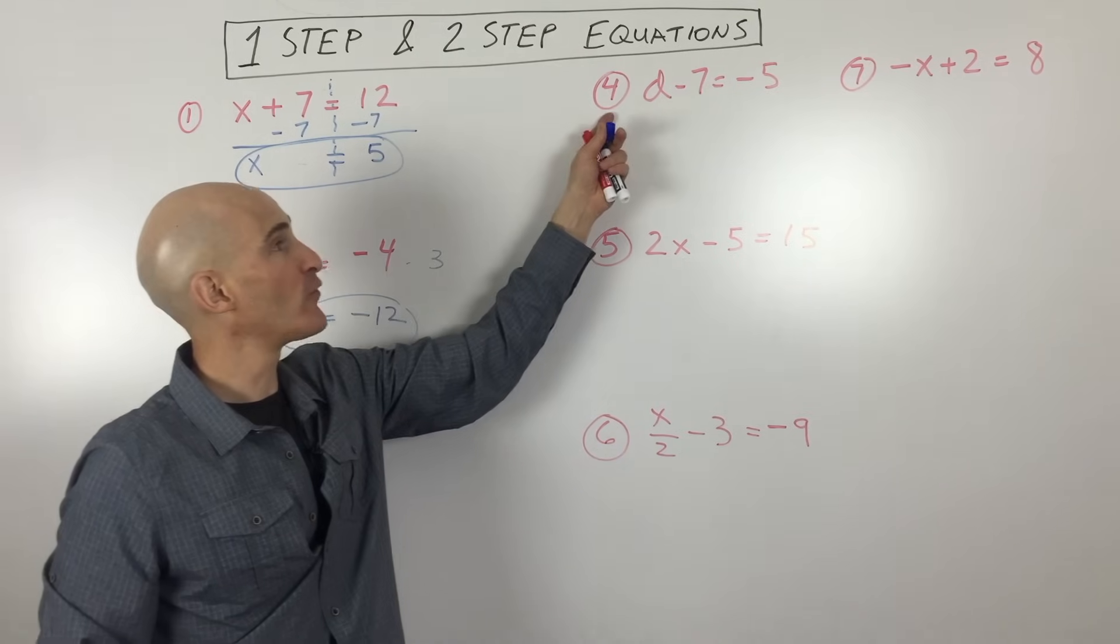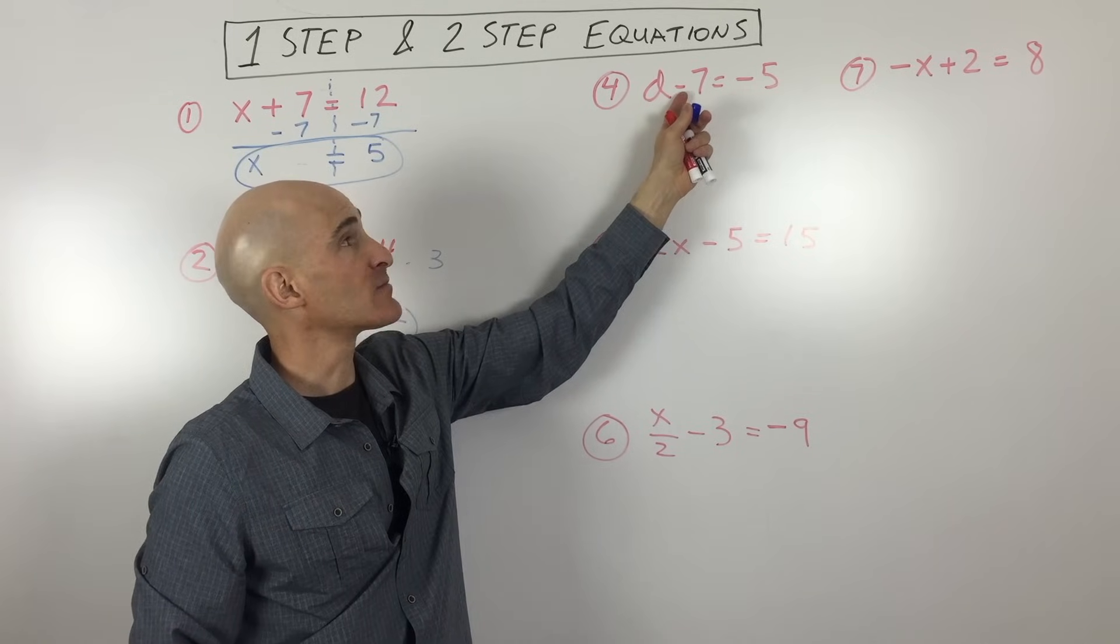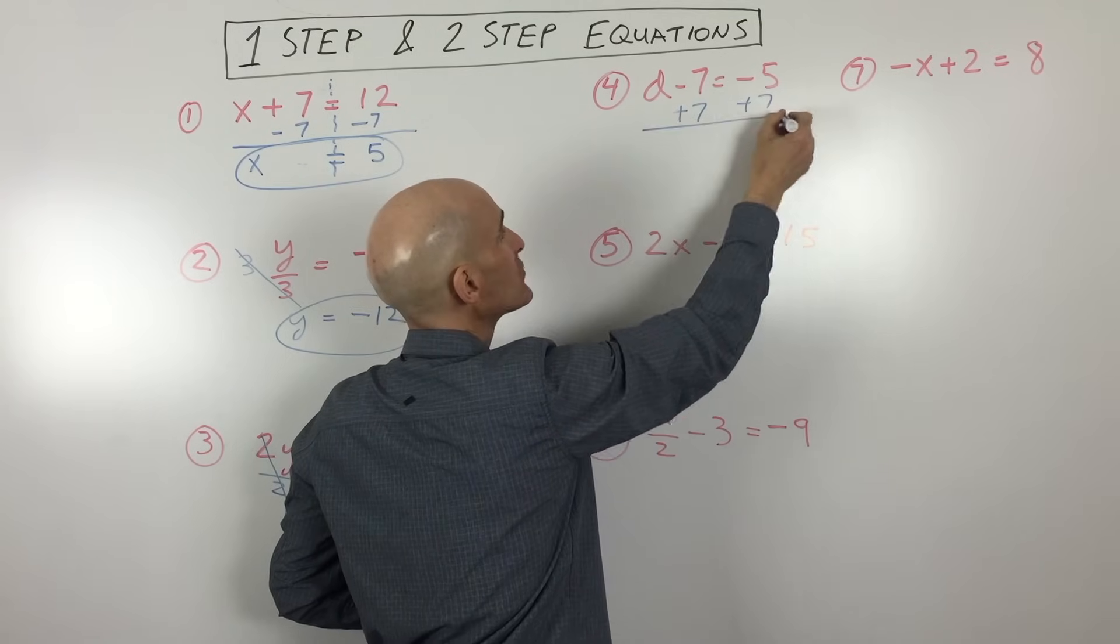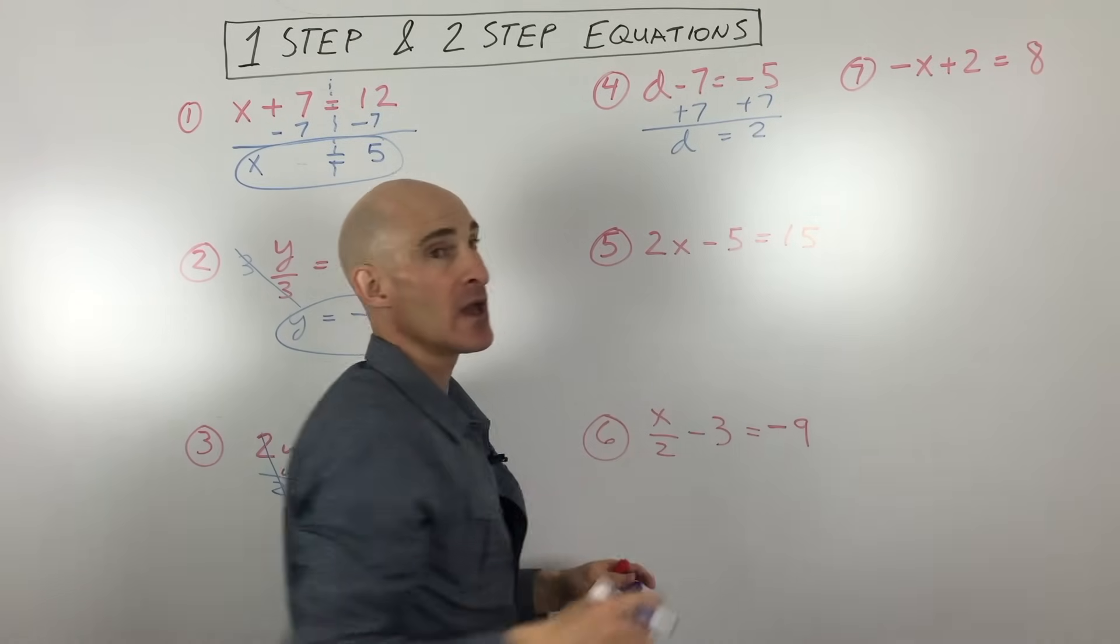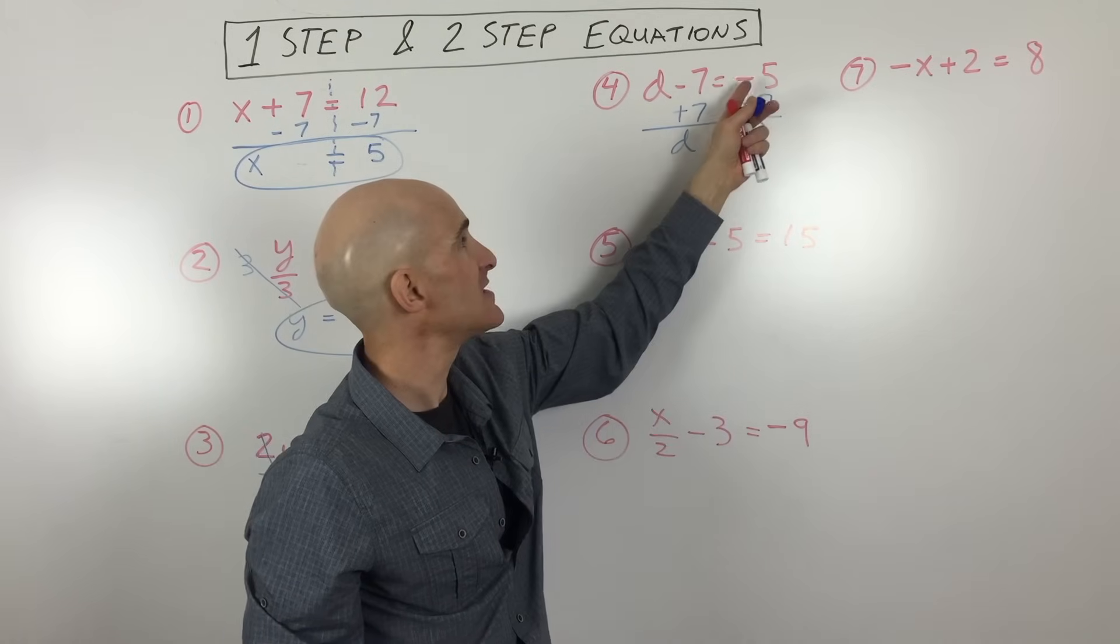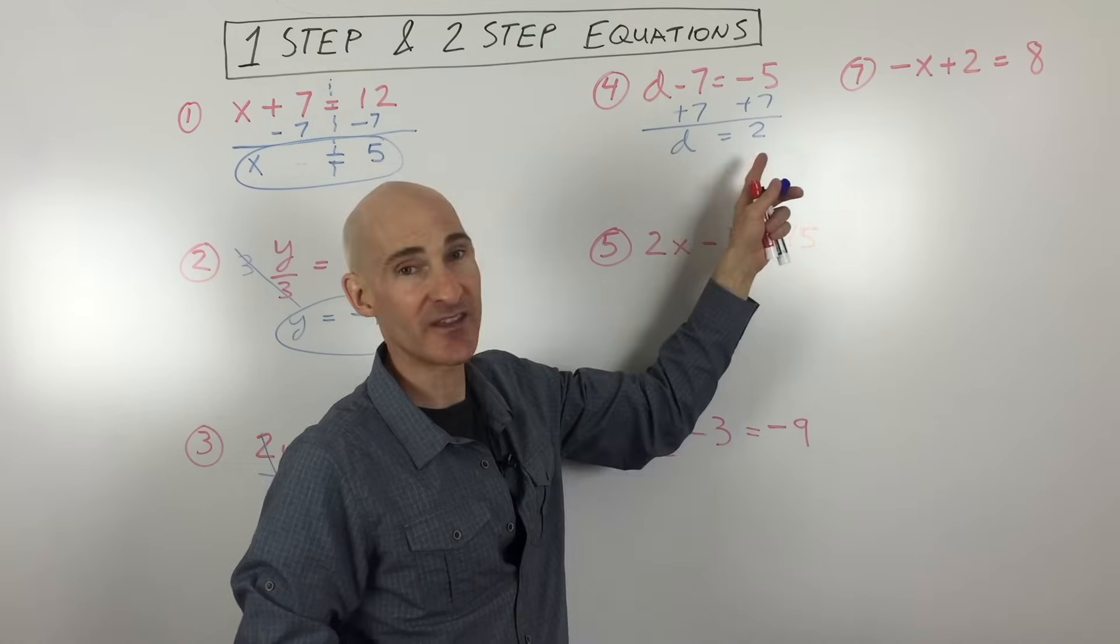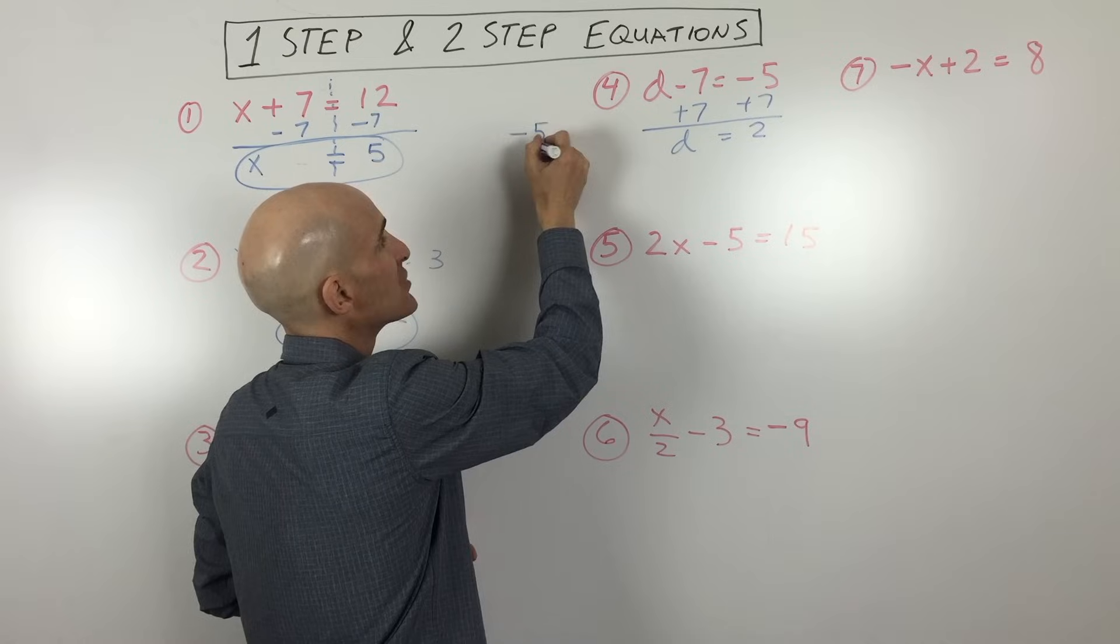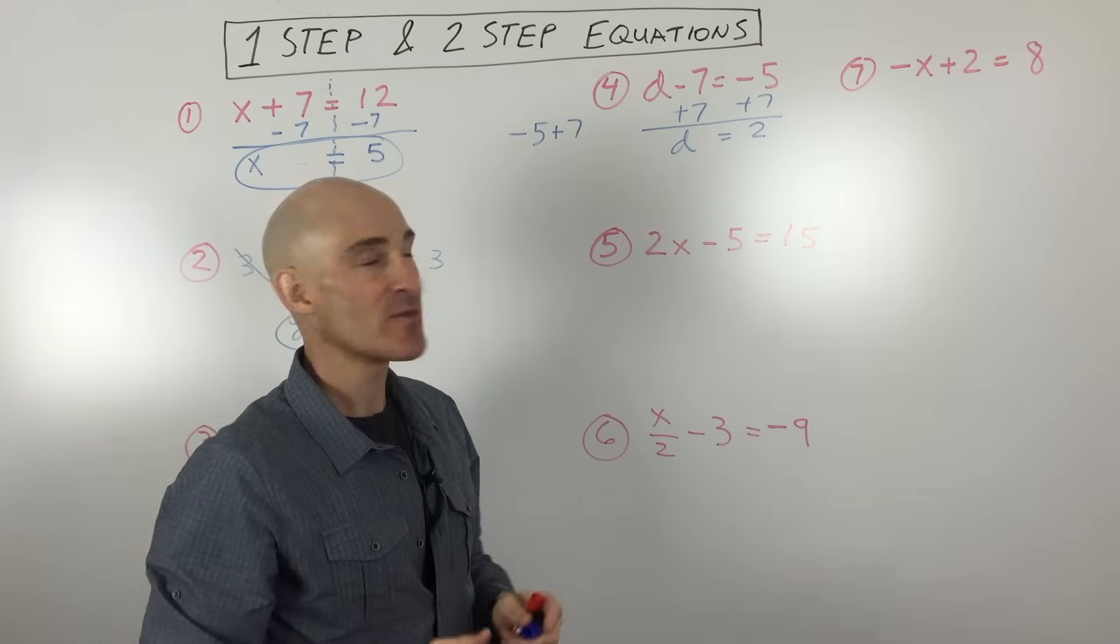Let's go over here to example number 4. Here we have d minus 7 equals negative 5. So minus 7 is like subtracting 7. The opposite of subtracting 7 is to add 7. Again, we want to do it to both sides. So the negative 7 and 7 cancel. We get d equals 2. Now, I just want to make a point right here. At this point, sometimes students get a little bit confused. They see the negative 5 and the 7, and they're used to seeing them horizontally instead of vertically like this. So what I recommend, if you get a little bit confused by this, is just to go ahead off to the side of your paper and just write negative 5 plus 7, and then you can analyze it from there. Just a different perspective.